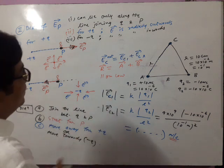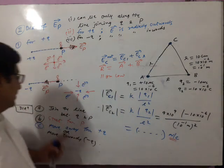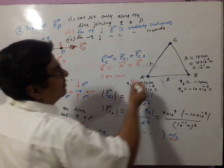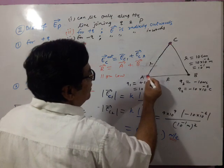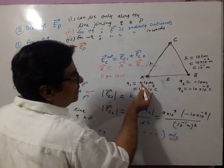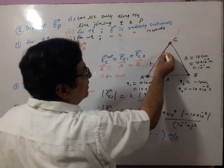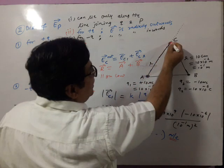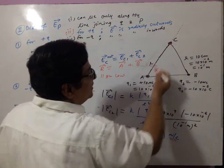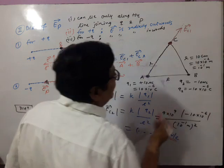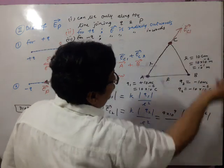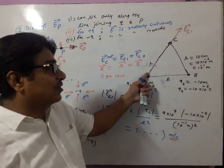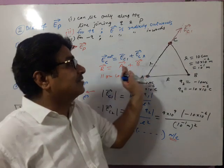We apply this concept in the numerical. This is EC1 vector and EC2 vector. For finding direction of EC1 vector — electric field at C due to charge placed at A — first join the line between charge and point, then start from point C. Q1 is positive charge, so move away from positive charge. That is the direction of EC1.